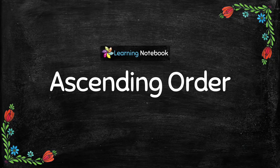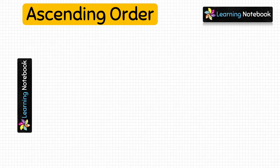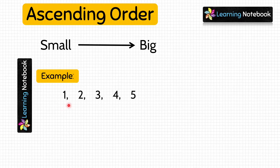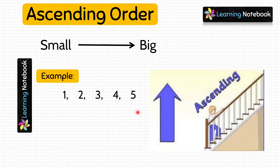Ascending order means arranging numbers from small to big. For example: 1, 2, 3, 4, 5. Look at these numbers — we have arranged them from small to big. 1 is the smallest number and 5 is the greatest or biggest number.